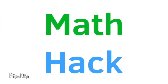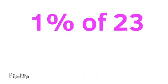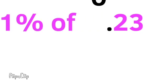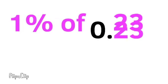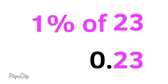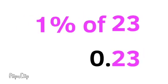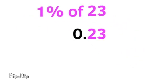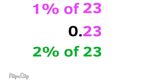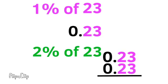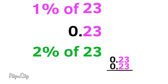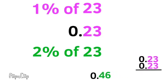Here's a math hack. Find 1% of a number by moving the decimal two places to the left. 1% of 23 is 0.23. 2% of 23 is 2 times 0.23, or 0.46.